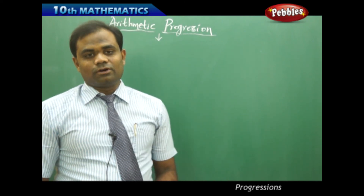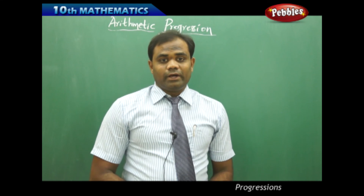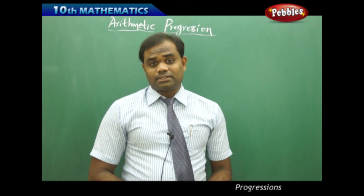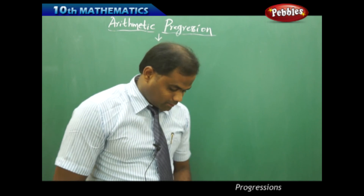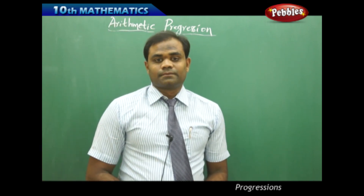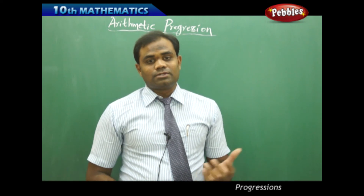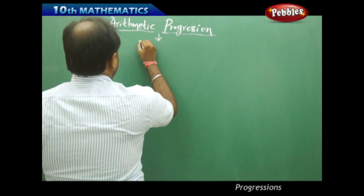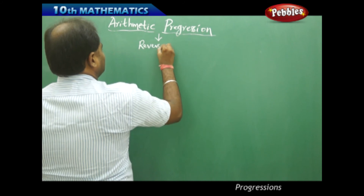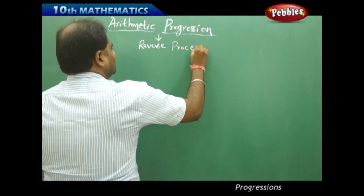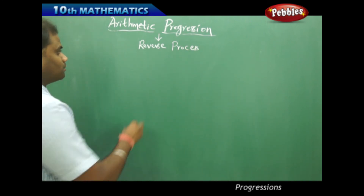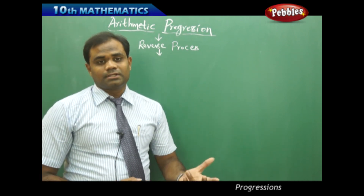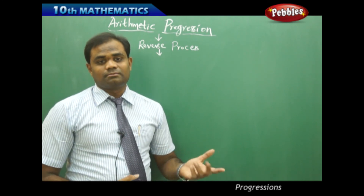Now let's see the reverse process of understanding the arithmetic progression, where if a pattern is given I can identify the first term, the common difference, and the nth term. But what if only the first term and the common difference are given? Can we construct the whole sequence using only A and D? Let's see the reverse process with an example problem.